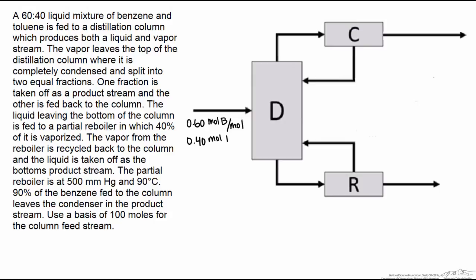So it's fed to the distillation column which produces both a liquid and a vapor stream. So we have the vapor here. It leaves the top of the column where it is completely condensed. So here's our condenser and split into two equal fractions.